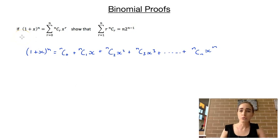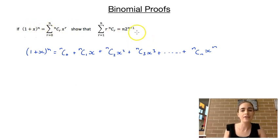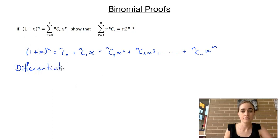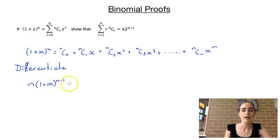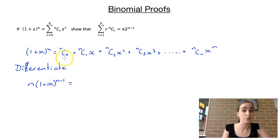We can't just substitute x = 1 as we did in those first examples, because that would give a power of n on the right-hand side, not n minus 1 as required. So instead, we're going to differentiate both sides of this expression. Differentiating the left-hand side using the chain rule gives n multiplied by (1 + x)^(n-1). On the right-hand side, nC0 is just a constant equal to 1, so it differentiates to 0.